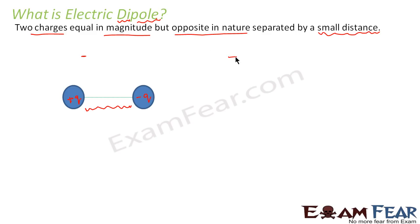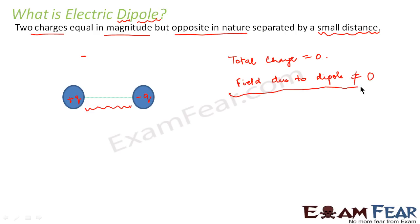The total charge of this system is obviously zero, because both are of equal magnitude and opposite nature. However, this doesn't imply that the field due to the dipole is zero. Many of you might think that if total charge is zero then the field should also be zero, but that is not the case. As the charges are separated by a small distance, the electric fields due to the two charges don't exactly cancel out — it is partially cancelled but not completely.